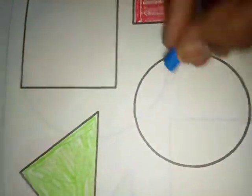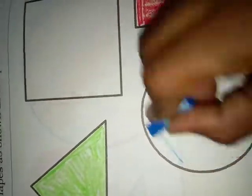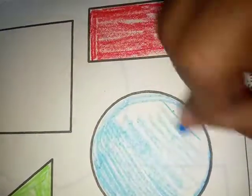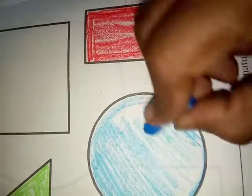We will do a circle. We will do a sky blue color. In the camera all the colors are visible, but actually it is very dark. We will do this in the sky blue color.